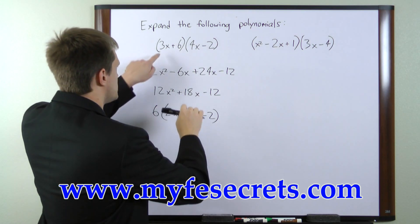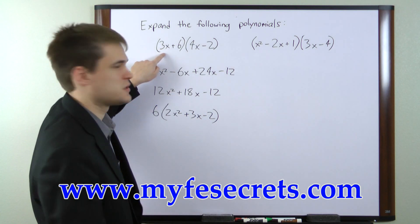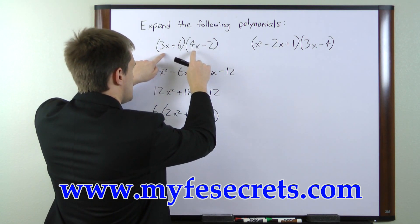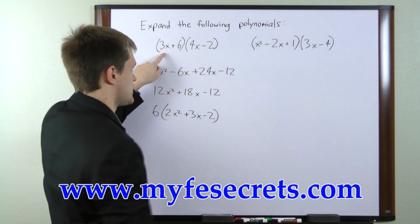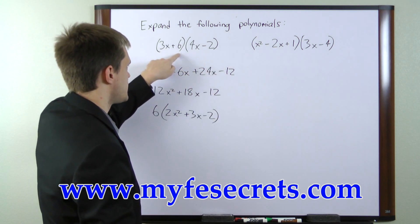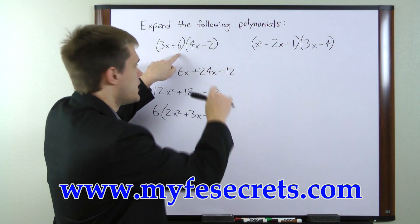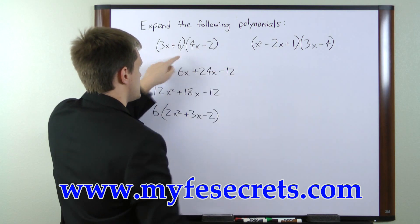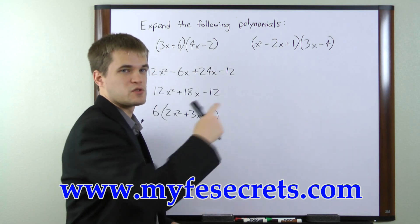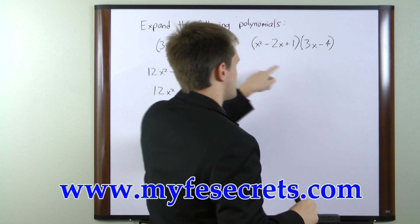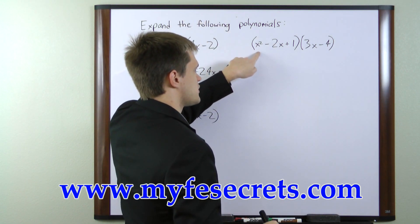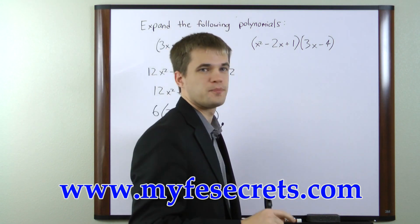The FOIL method takes the first term in the first expression and multiplies it in order by each of the terms in the second expression. Then moves on to the second term in the first expression and multiplies it by each of the terms in the second expression. So to extrapolate that to a three termed expression, we'll start with the first term, move to the second term, and then move to the third term.